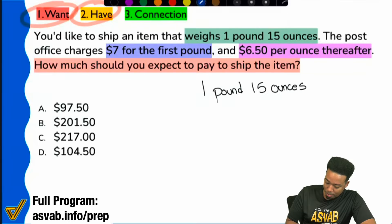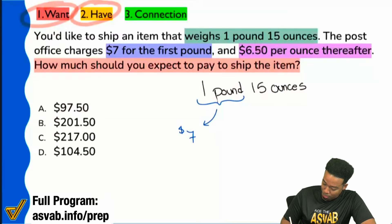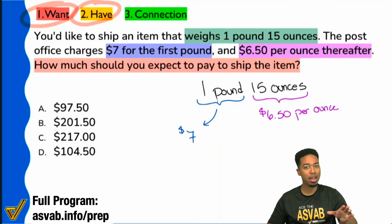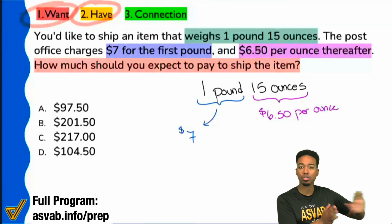So, what that means to us, my party people, is this. Right here, the first pound, that's going to be $7. And then, afterwards, the $6.50 per ounce thereafter, we're multiplying the 15 ounces that we have. This is going to be $6.50 per ounce. That's right here. This right here is where we are applying that $6.50. The entire first pound, that's covered. That's $7. $7 right there.